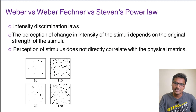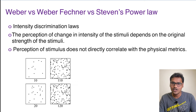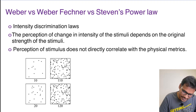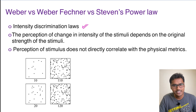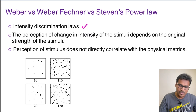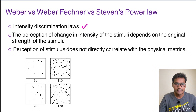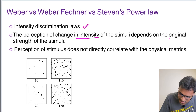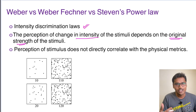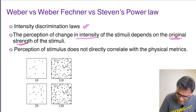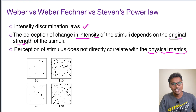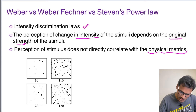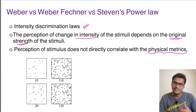Coming to the second group of three laws — Weber law, Weber-Fechner law, and Steven power law — all of them indicate intensity discrimination. They all fall under one concept: perception of change in intensity of the stimuli depends upon the original strength of the stimuli, and perception of stimulus does not directly correlate with the physical metrics. Let's understand these with examples.